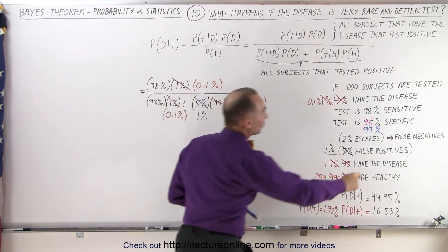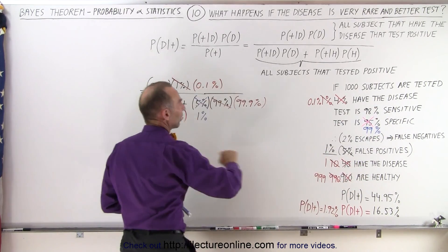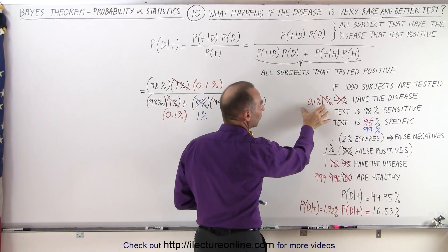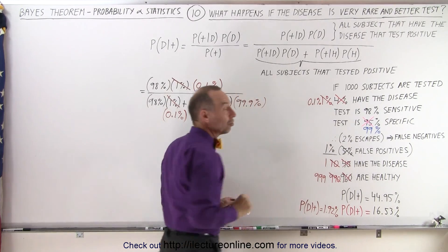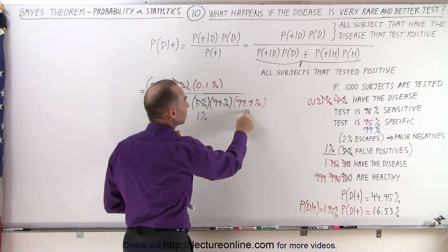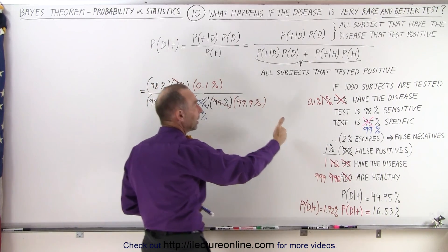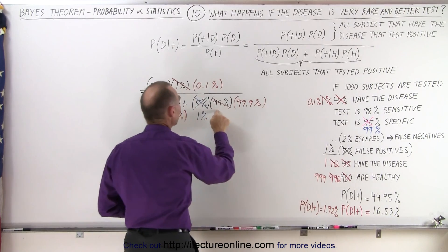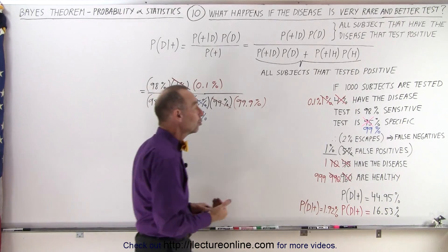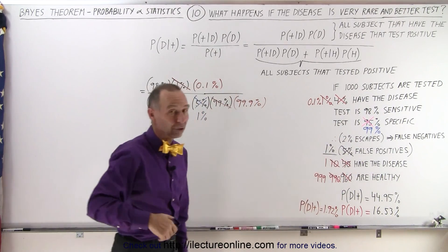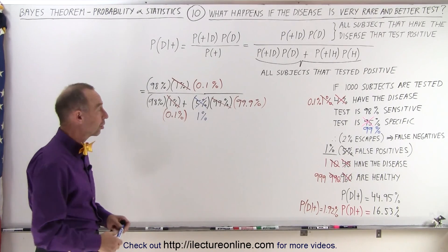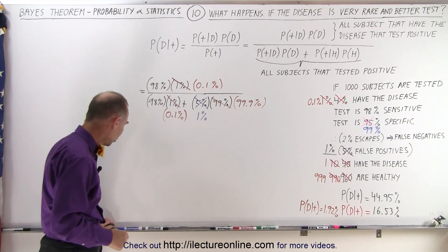98 percent represents the sensitivity of the test. 0.1 percent represents the probability that a subject tested has a condition you're looking for. That's repeated over here. And here we have 99.9 percent, that is the percent of the population that is healthy. But now the rate at which you see false positives has drastically reduced from five percent down to just one percent. That should increase the probability that when you test positive, you actually do have the condition you're looking for.